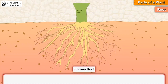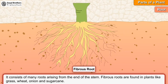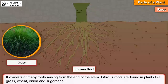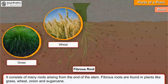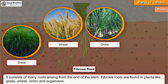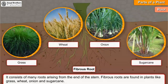Fibrous root: It consists of many roots arising from the end of the stem. Fibrous roots are found in plants like grass, wheat, onion and sugarcane.